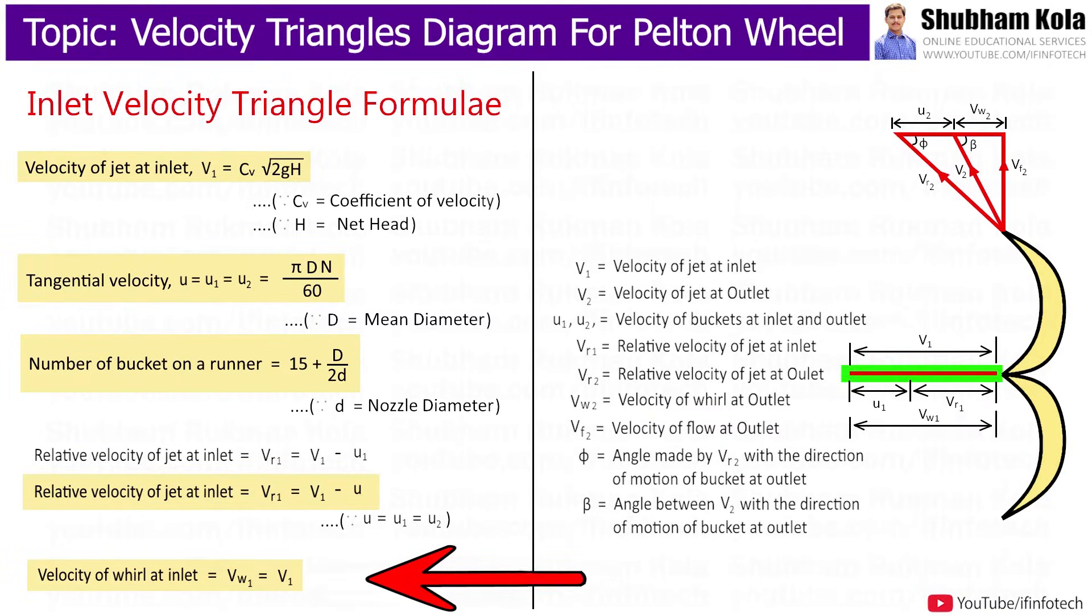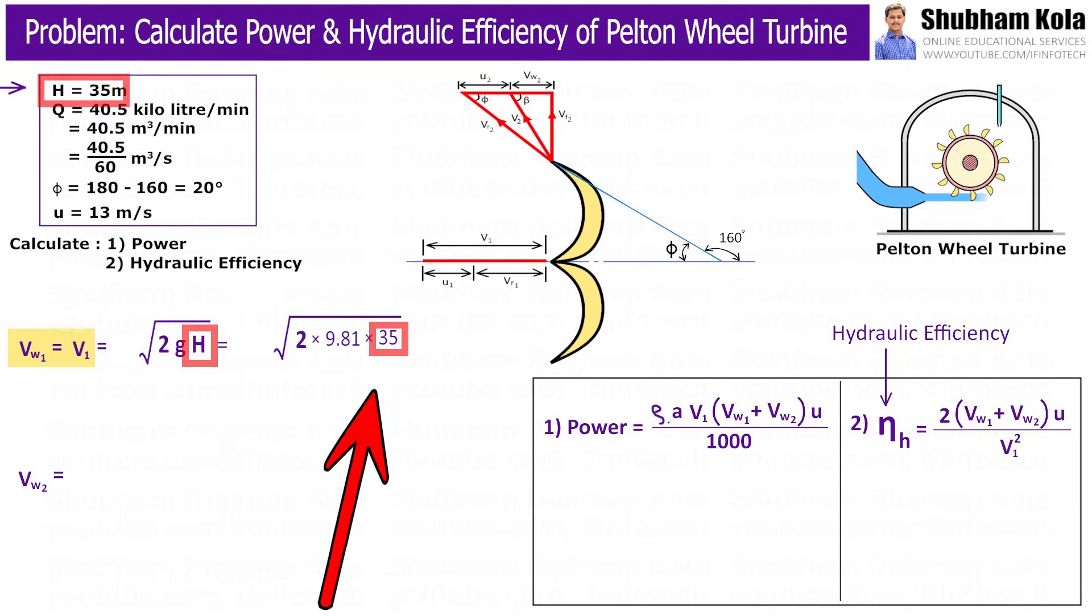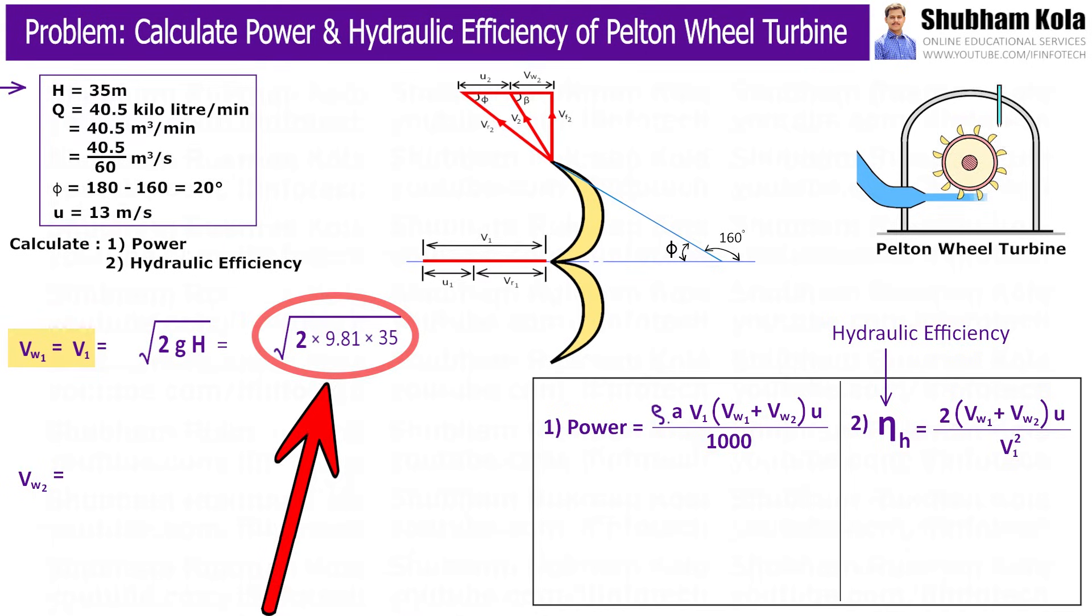In previous video, we have already seen that for Pelton Wheel turbine, V1 and VW1 is equal to √(2gH) and H is 35m i.e. net head which has been provided in given data. And the numerical value for acceleration of gravity i.e. g is 9.81 m/s². So here I'll put all the values and by calculating this, we'll get velocity of jet at inlet i.e. V1 = 26.2 m/s which is also equal to VW1.